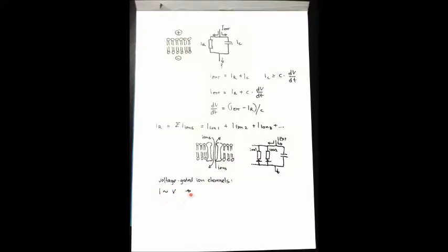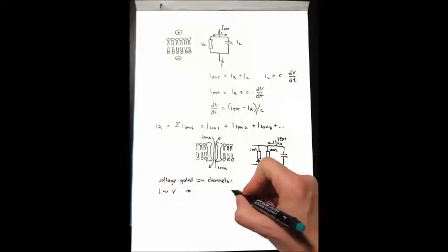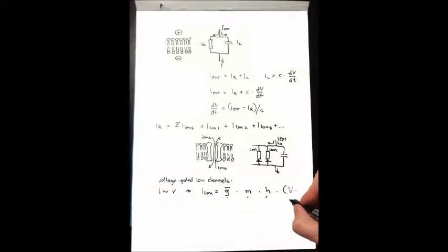We can then write an equation for each ionic current that looks like this. Ionic current I equals G max times M times H times V minus E. This is what Hodgkin and Huxley used in their groundbreaking work on the squid giant axon in 1952. What are these individual factors?